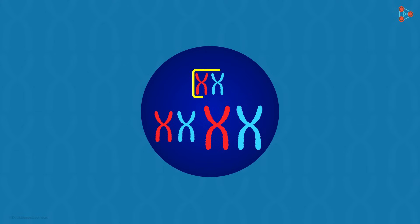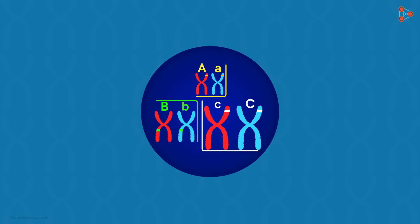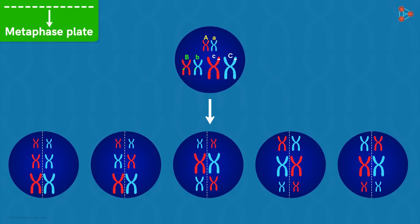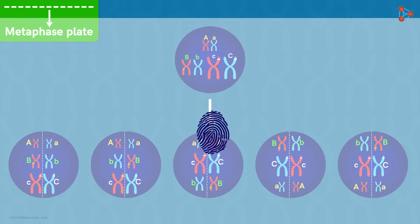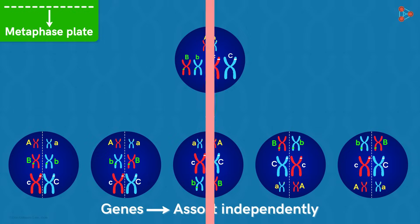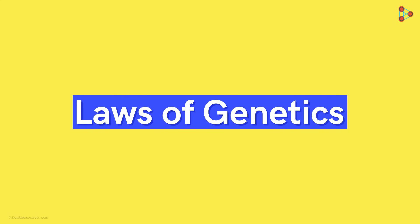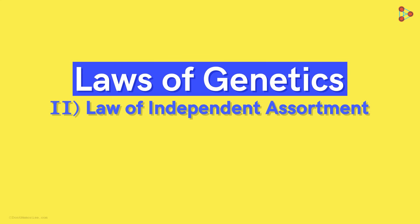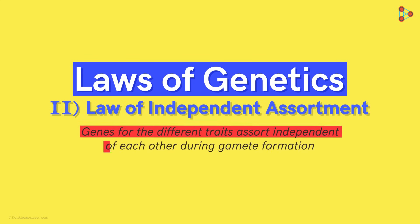Let's say one pair has genes capital A and lowercase a, another pair has gene set capital B and lowercase b, while a third has capital C and lowercase c. We are considering all sets to be heterozygous to understand the concept better. When the chromosomes get separated in the respective cells, it's obvious that the genes will assort independent of each other. There is no rule that all dominant alleles will go to one cell and all recessive to the other. This is exactly what Mendel had to say in his second law — the Law of Independent Assortment.